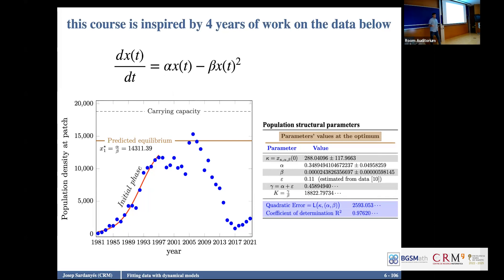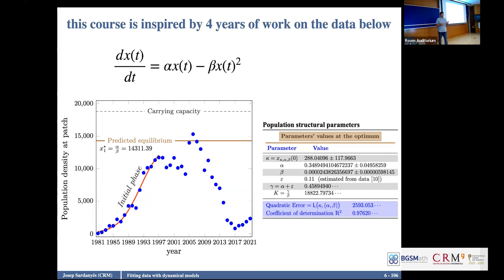For the first part of the dynamics, just before the entry of the predators, we fit a logistic function — a very simple equation. These are the parameters we have. Epsilon is the death rate of the birds, estimated directly from the data. Then we estimated the intrinsic growth rate and the competition parameter beta, related to competition between the birds. We used a deterministic algorithm called Levenberg-Marquardt, and we achieved a very good fitting.